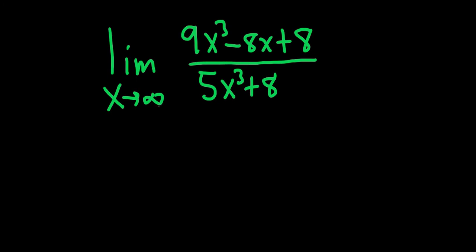Method one is that you can look at this and just write the answer down. So whenever you have a polynomial over a polynomial, you look at the leading coefficients. So in this case, the leading coefficient here is 9. In this case, the leading coefficient here is 5.